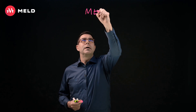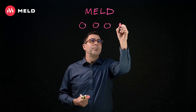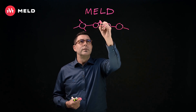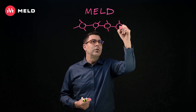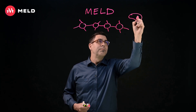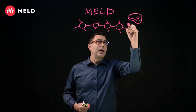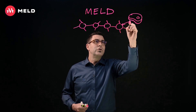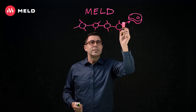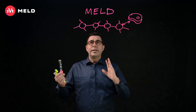MELD is a layer one blockchain. We're EVM compatible, and we're a proof-of-stake blockchain, meaning that users can stake onto the blockchain and generate a yield. Each node has the ability to generate a yield. You can take your MELD tokens and stake them onto the chain and generate a yield from there.